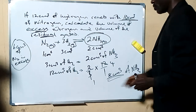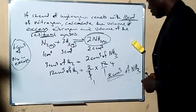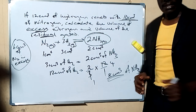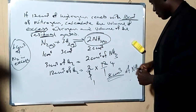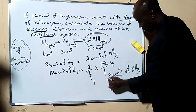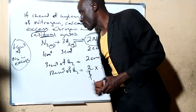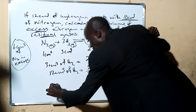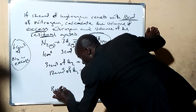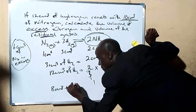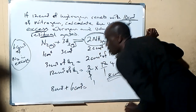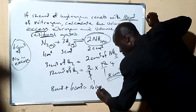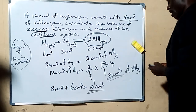So 12 cm³ of hydrogen will produce 8 cm³ of ammonia when combined with nitrogen. Now, the residual gases are the gases that remain at the end of the reaction. We have 8 cm³ of ammonia and 6 cm³ of nitrogen remaining. Adding them together: 8 cm³ + 6 cm³ = 14 cm³. The total residual gas volume is 14 cm³.